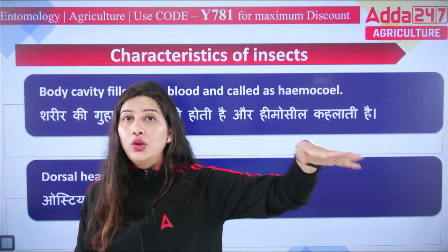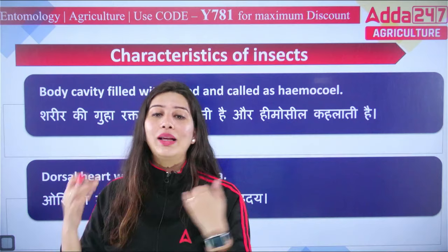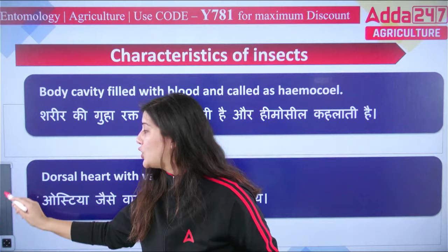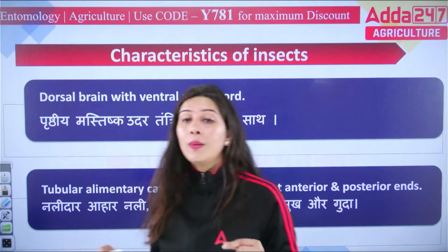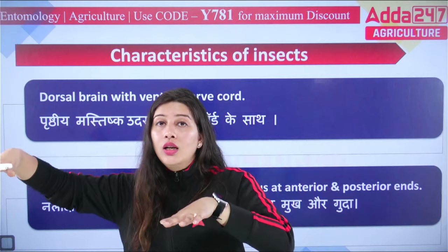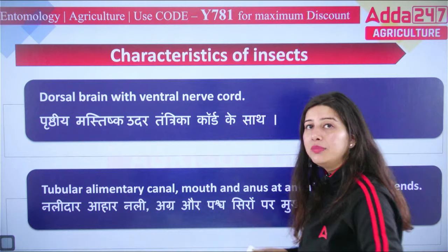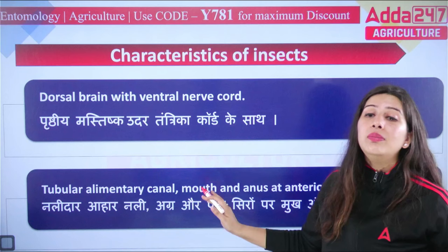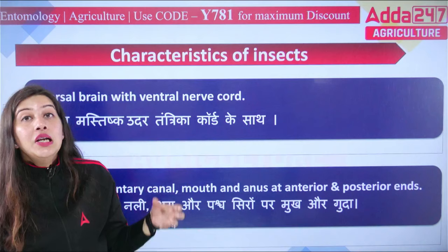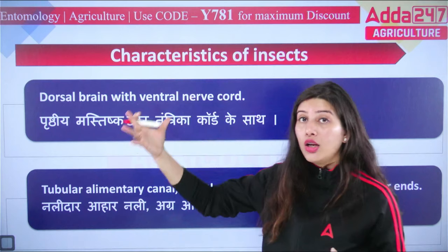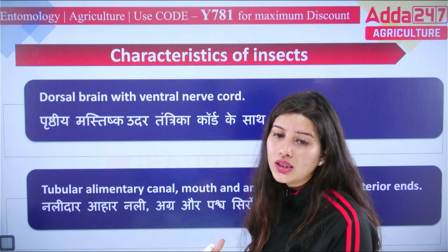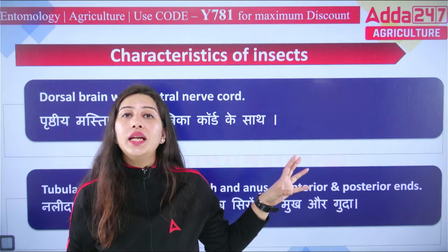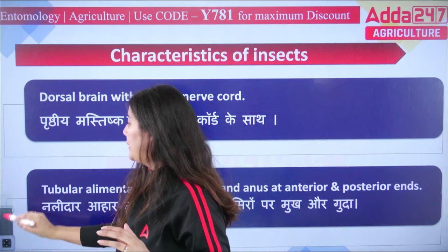The insect has a dorsal brain as well. There is a tubular alimentary canal that contains the entire digestive system — starting from the mouth cavity and ending at the anus, elongated and tubular in shape. This canal includes foregut, midgut, and hindgut. We will study the alimentary canal in detail in a separate lecture dedicated to the digestive system.